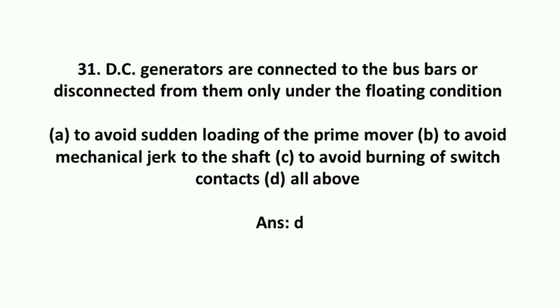DC generators are connected to the bus bars or disconnected from them only under the floating conditions to avoid sudden loading of the prime mover, to avoid mechanical jerk to the shaft, and to avoid burning of switch contacts.